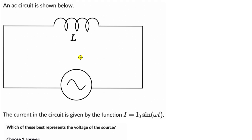Let's think about how this inductor behaves when there is a current in the circuit. As current passes through the coils of the inductor, there will be a magnetic field generated. Since this is an AC source, the current constantly oscillates, so the strength of the magnetic field produced by the current in these coils also changes.